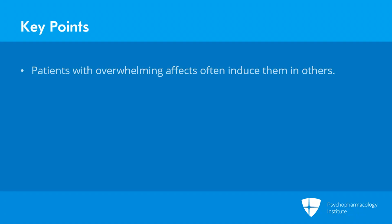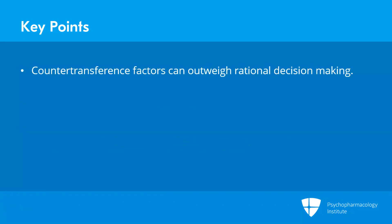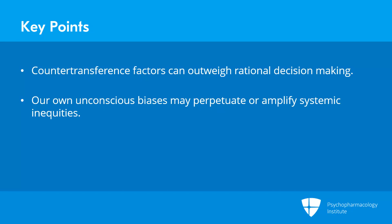In summary, patients with overwhelming affects very often induce corresponding affects in others. We can then prescribe in efforts not to address the patient's anxiety, but to address our own, and this can lead to irrational prescribing. When patients bring transference-based negative preconceptions into care, it is typically important to identify this and address it before, or when, it becomes a source of treatment resistance. There is an increased likelihood that countertransference factors outweigh rational decision-making in the prescription of medications, and these things may be operating in us outside of our awareness. As part of the recognition of the irrationality of the prescriber, it's also important to recognize how our own unconscious biases may perpetuate or amplify systemic inequities.